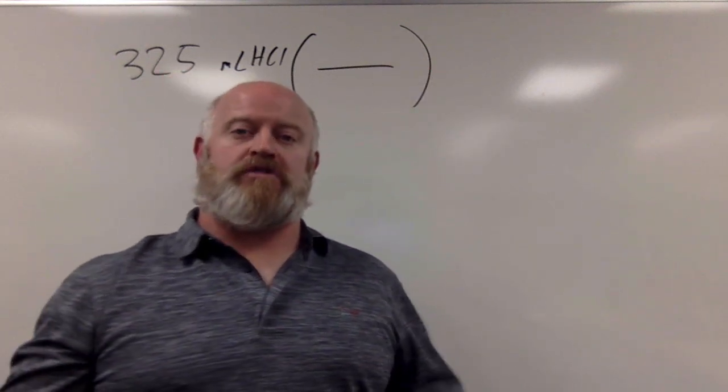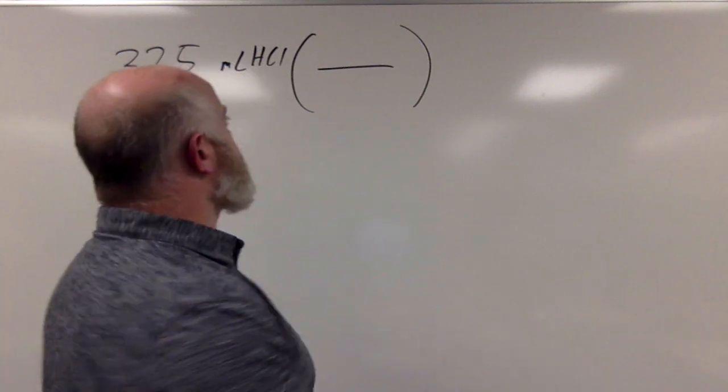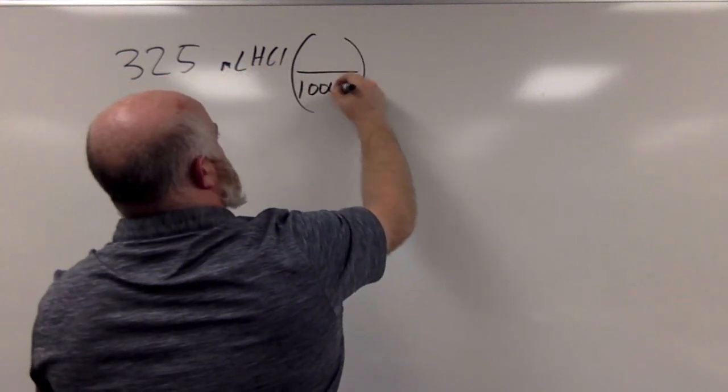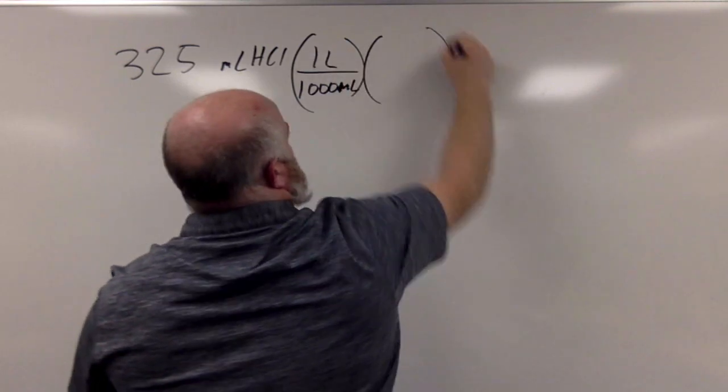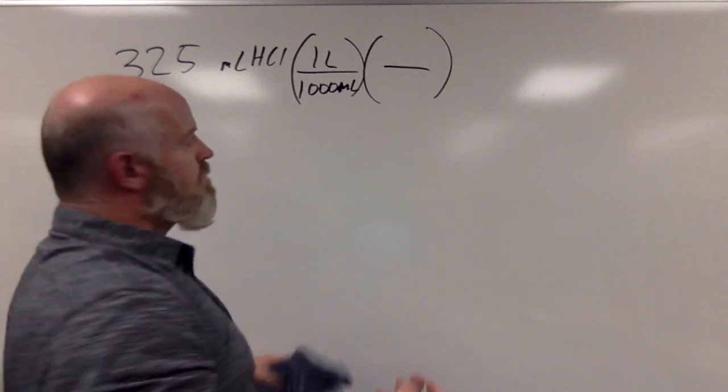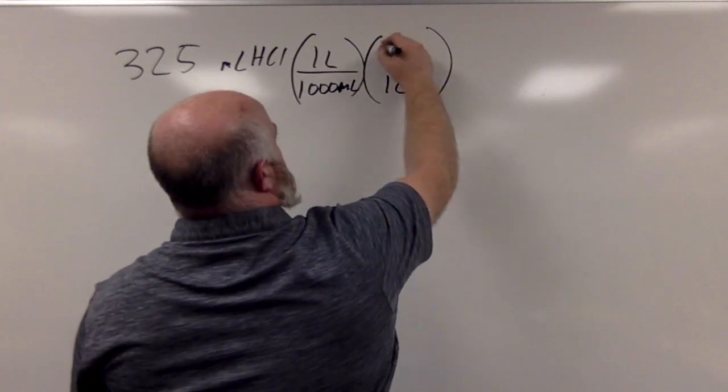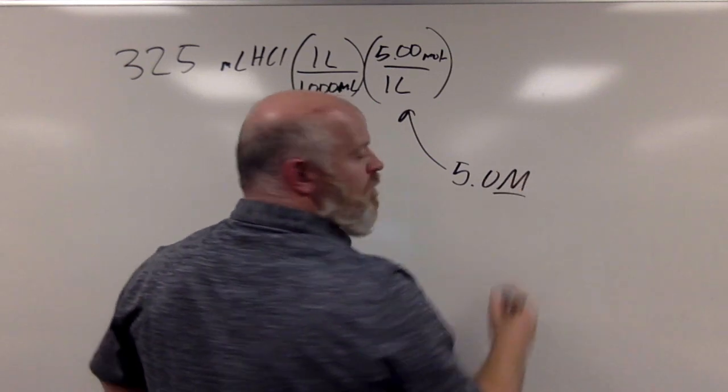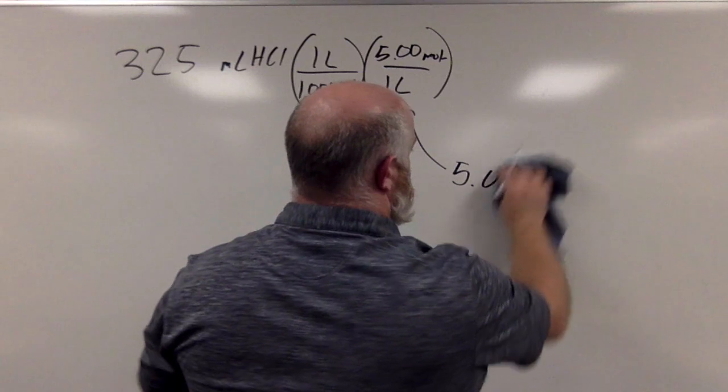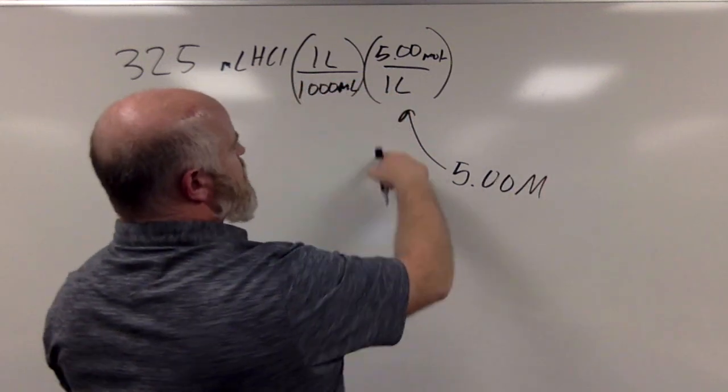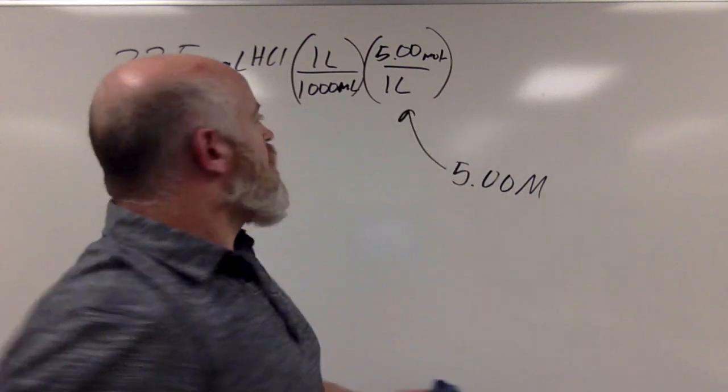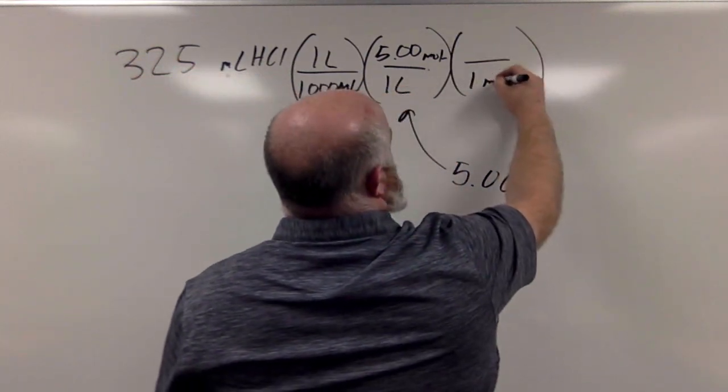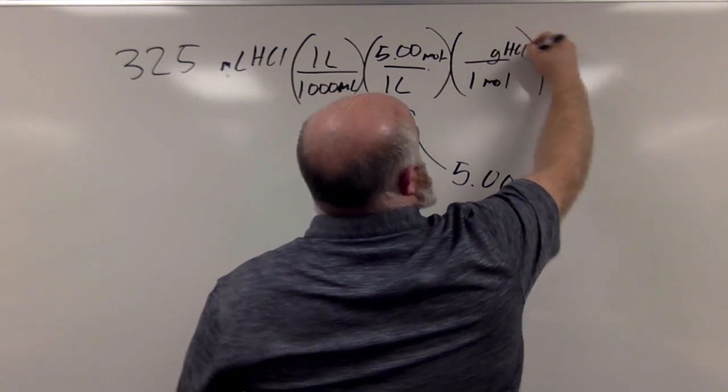So we have 325 milliliters of our HCl solution. And it's a 0.50 molar solution. Now remember, molarity is moles per liter. So my first step, anytime I'm dealing with concentration, is to convert from 1,000 milliliters to 1 liter. So we do a quick little SI unit conversion. And then we know that for every 1 liter, we have 5.00 moles. This is where the 5 molar solution comes from. We have two zeros on that.